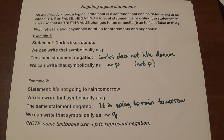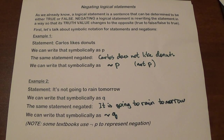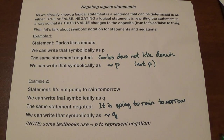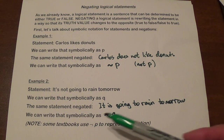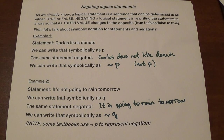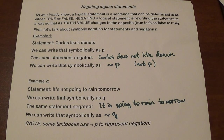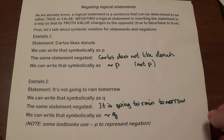I do want to mention this because sometimes if you're browsing online or reading another textbook, some textbooks or online resources use a different symbol to represent negation. I'm just showing you that in case you run across it and wonder why there are two different symbols. It actually happens sometimes in mathematics.